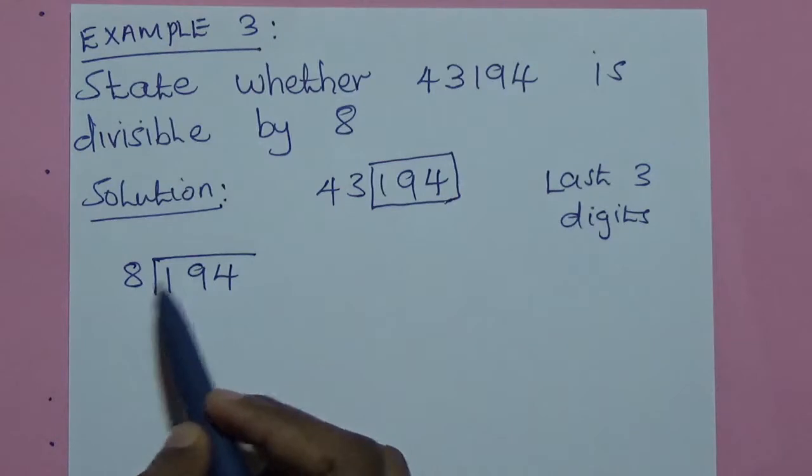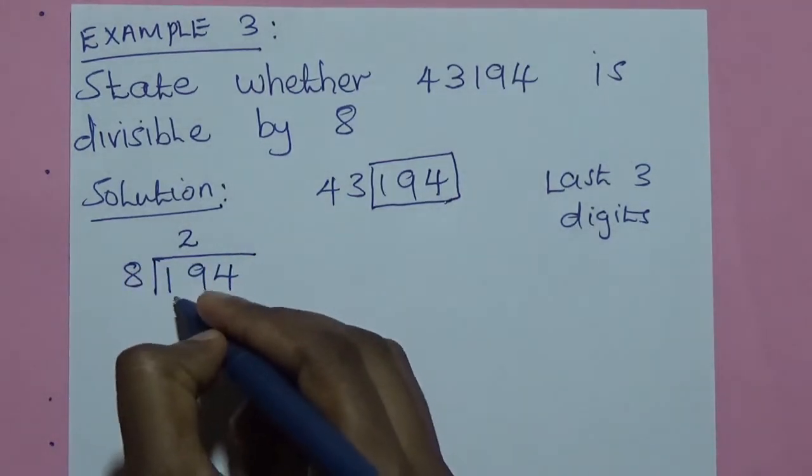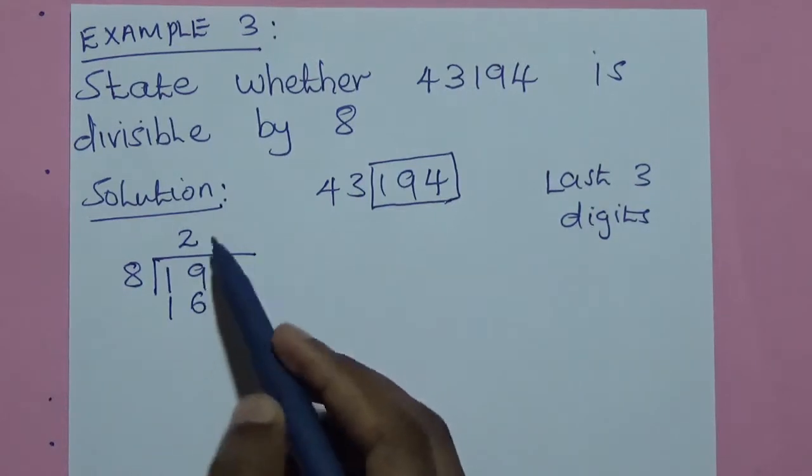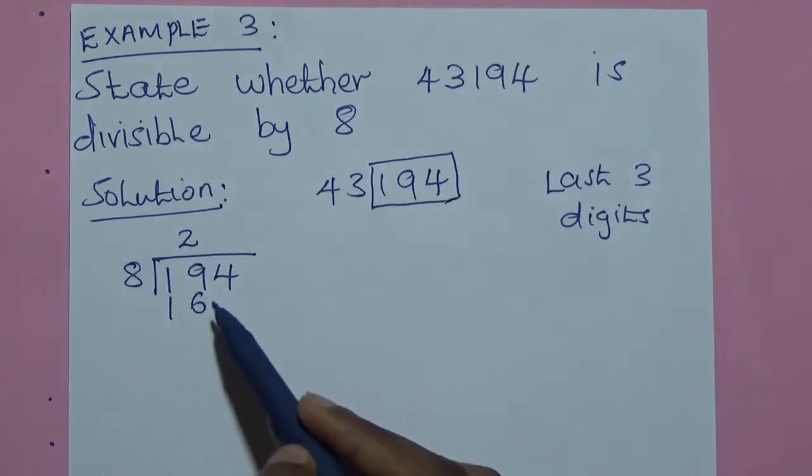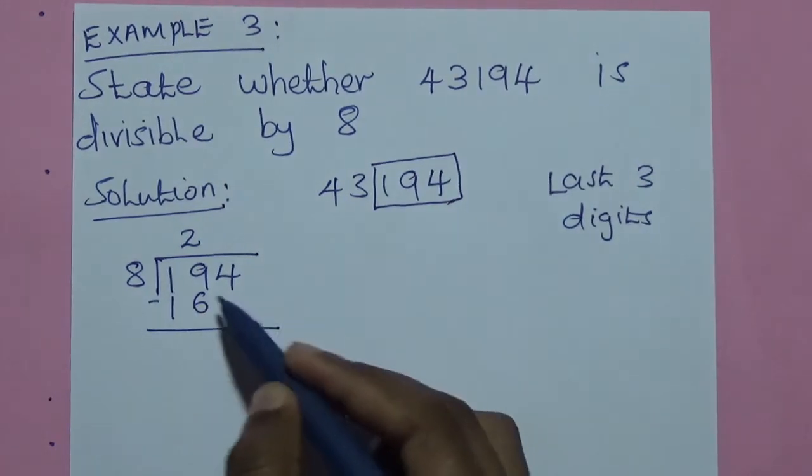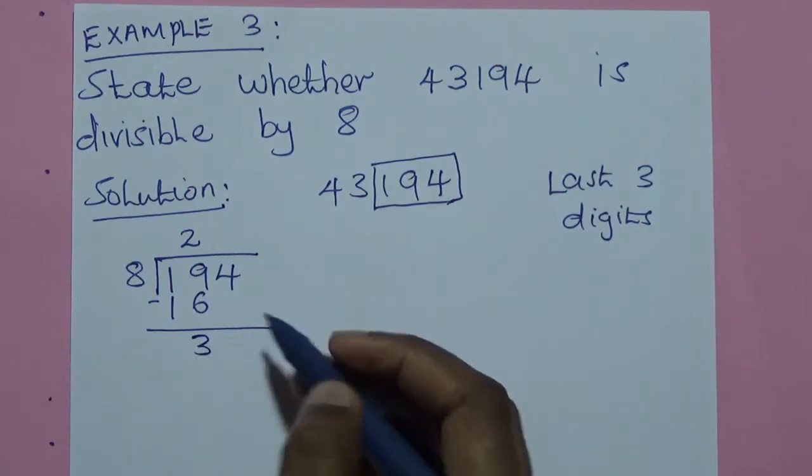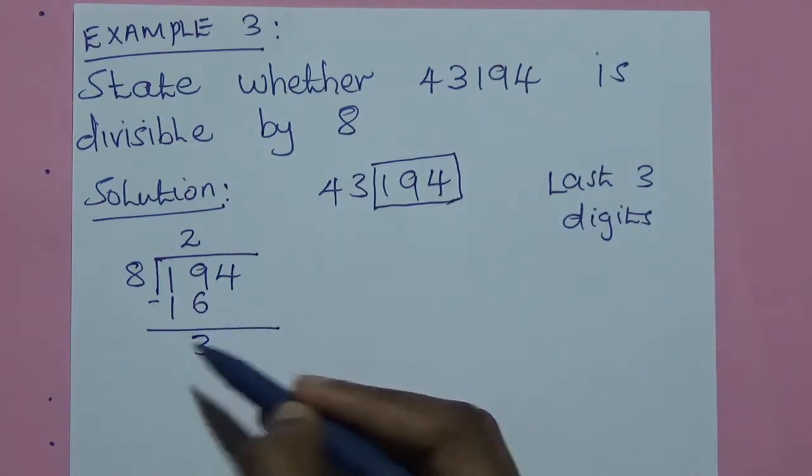19 divided by 8 will be 2 because of 16. Because 2 times 8 is 16. We subtract, 9 minus 6 will be 3 and 1 minus 1 will be 0.